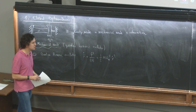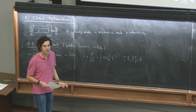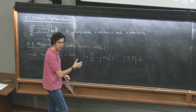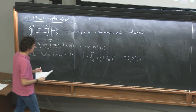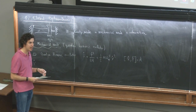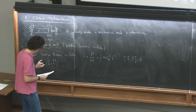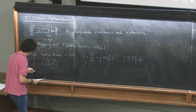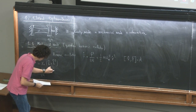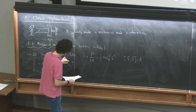The Hamiltonian of a quantum harmonic oscillator is written quantum mechanically with operators p and x, which fulfill the commutation rule [x, p] = iℏ. This Hamiltonian introduces two parameters: the mass of the oscillator, which is relevant, and the resonance frequency of the oscillator, omega_m. We can make a change of variables and write x and p in terms of creation and annihilation operators.